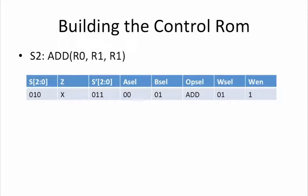State 2 follows the same model. So current state is 010 and next state is 011. Here, Asel equals 00, Bsel equals 01 and Wsel equals 01 and WN equals 1. Once again, our OPsel is an add.